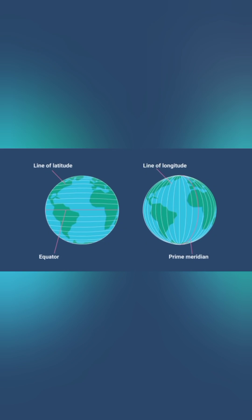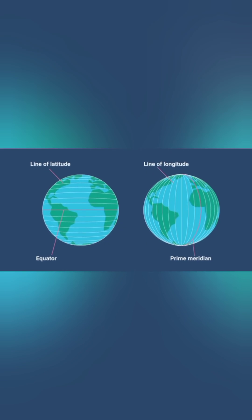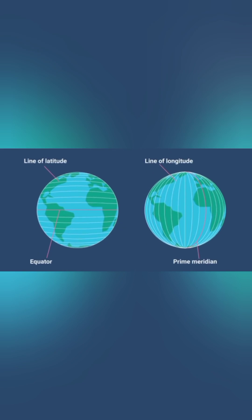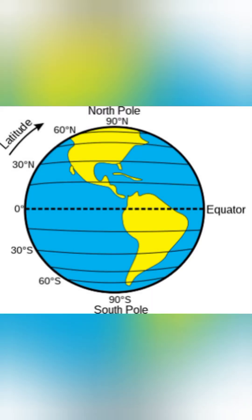Ever confused between latitude and longitude? Let's make it super simple. Latitude lines run horizontally, like a belt around the Earth. They measure how far north or south you are from the equator.